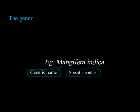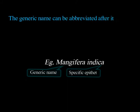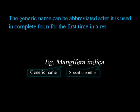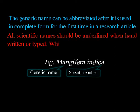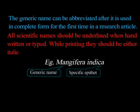The generic name can be abbreviated after it is used in complete form for the first time in a research article. All scientific names should be underlined when handwritten or typed, while in print they should be either italicized or in bold.